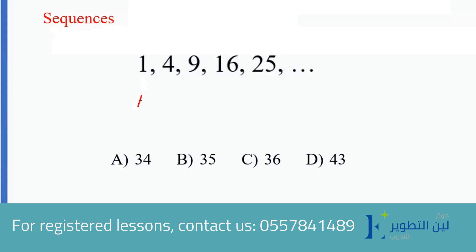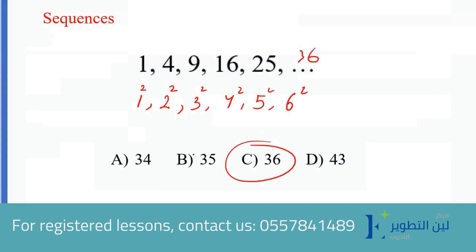This is 1 squared, this is 2 squared, this is 3 squared, this is 4 squared, this is 5 squared, and this should be 6 squared. The answer is 6C. As we said, if you know the answer just choose it — you don't have to spend time doing steps on scratch paper. Shall I move to the next one for you to practice?